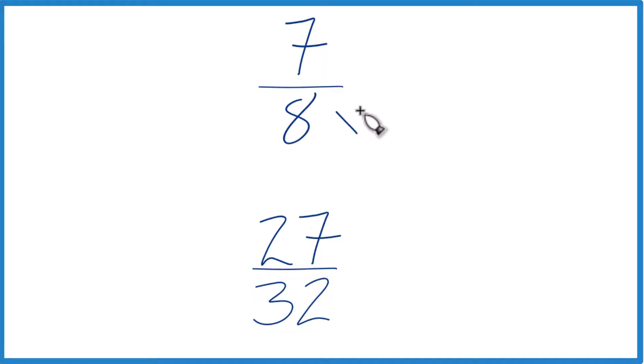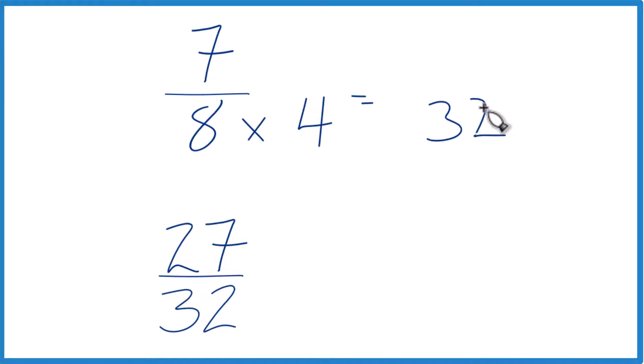So 32, 8, let's multiply 8 times 4, because that's going to equal 32. Down here we already have 32, so let's just keep this the same, 27 32nds.